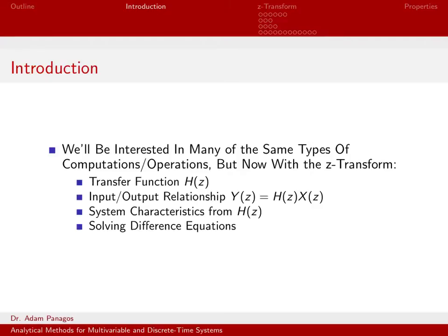The types of things we're going to do with the Z-transform are very similar to what we've done with other transforms. A linear discrete time system is described by its impulse response H(k), and sometimes we like to look at that impulse response in the frequency domain — we call that the frequency response. When we take the impulse response, a time domain quantity, to the Z-domain, we call that quantity H(Z), and that is what we call the transfer function of the system. This is very similar to how you took the continuous time impulse response into the S-domain with the Laplace transform and called H(S) the transfer function.